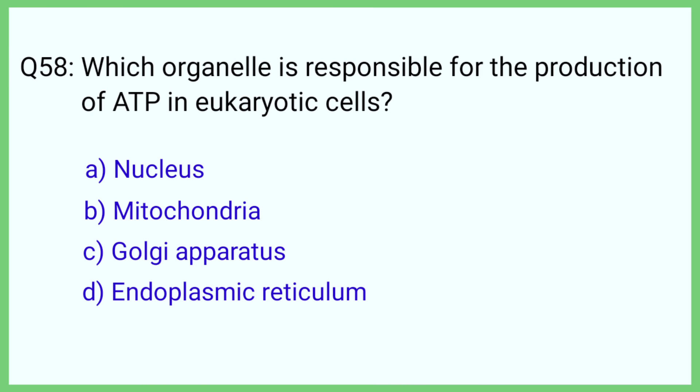Question number 58. Which organelle is responsible for the production of ATP in eukaryotic cells? The correct answer is option B: Mitochondria.